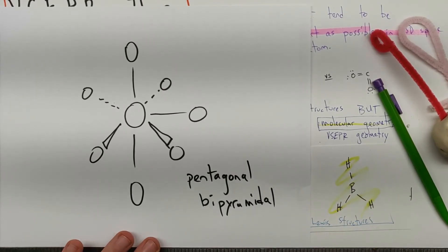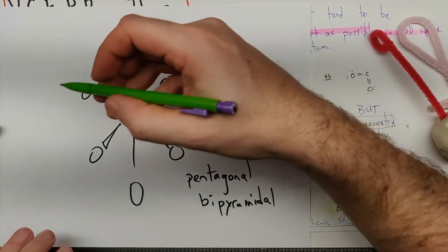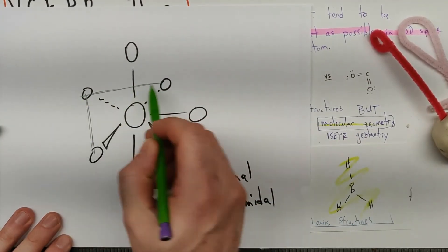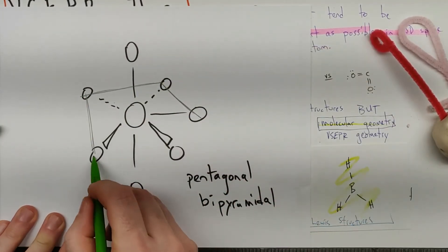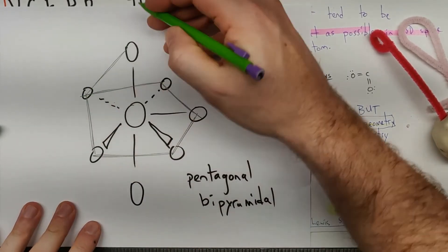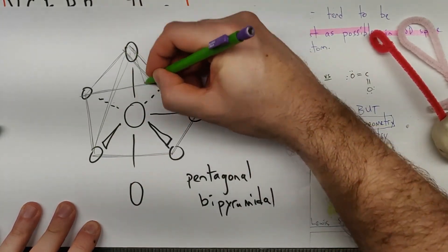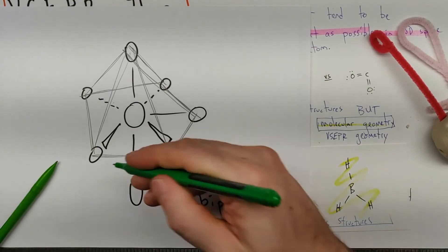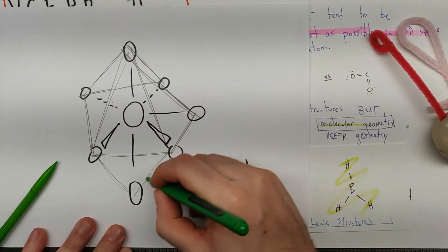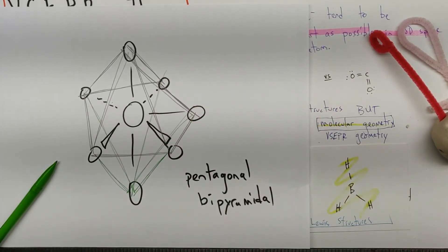All right. And for our pentagonal bipyramidal, so this is what it looks like. If we needed to see those pyramids, it's a five-sided base. There's the upper pyramid. And then there's our lower base. So we have pentagonal bipyramidal.